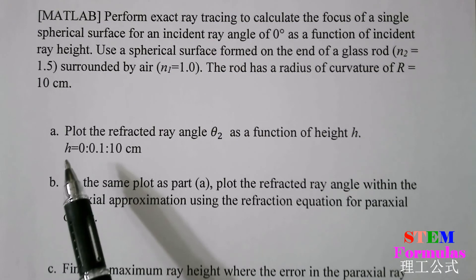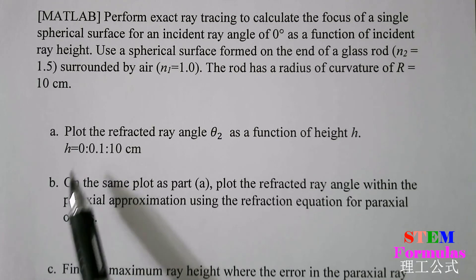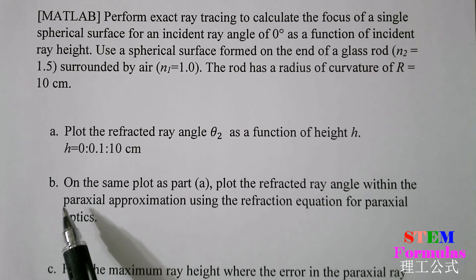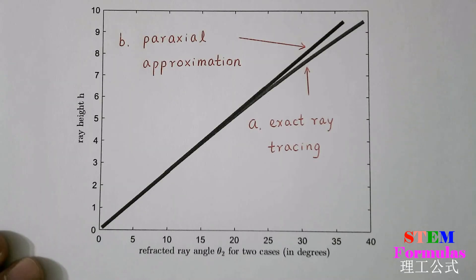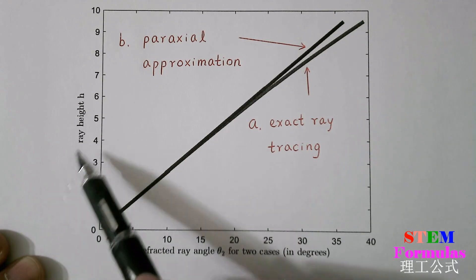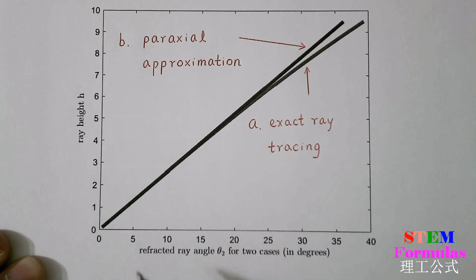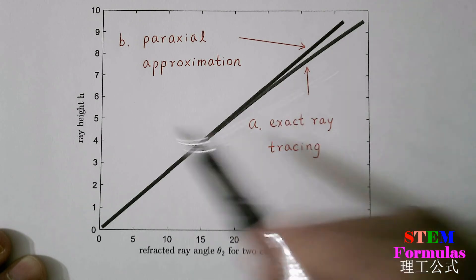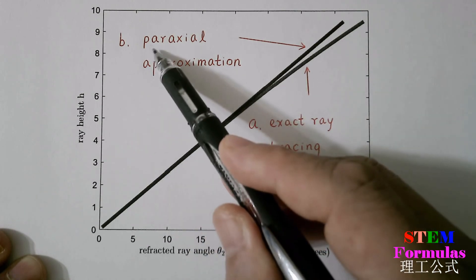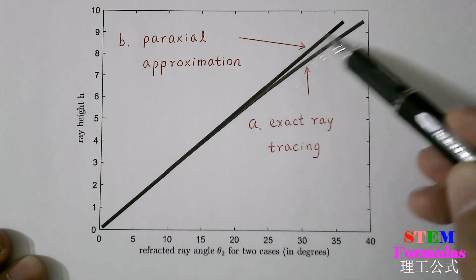For questions A and B, we plot in the same graph. In this graph, we plot ray height h as a function of refracted ray angle θ₂ for two cases. One is for exact ray tracing, this curve, and another one is for paraxial approximation, this curve.